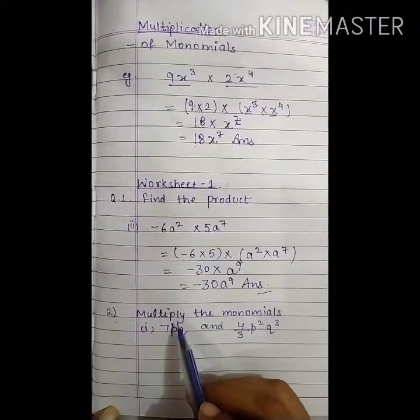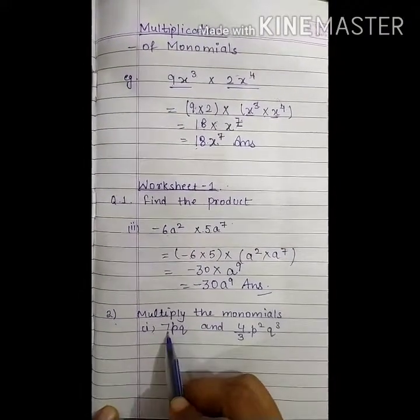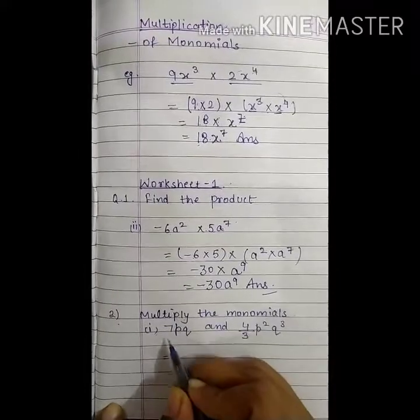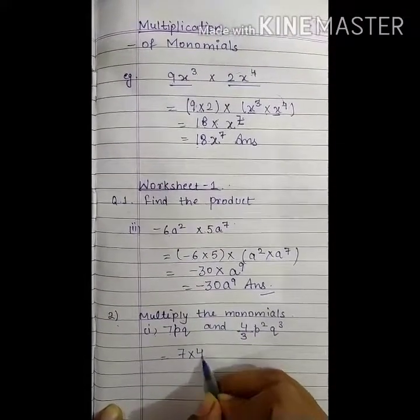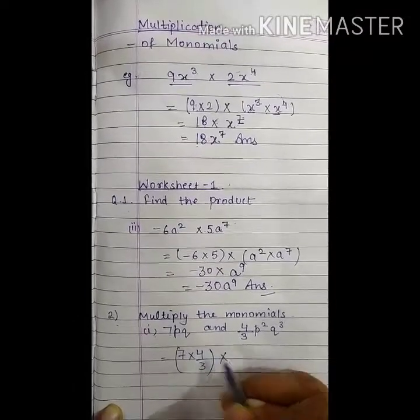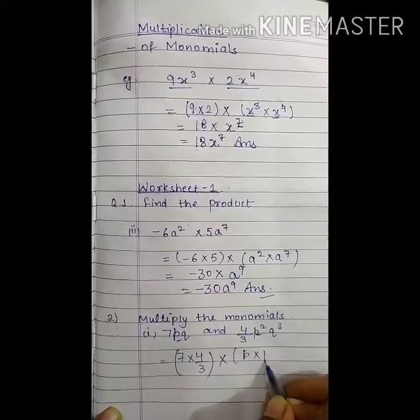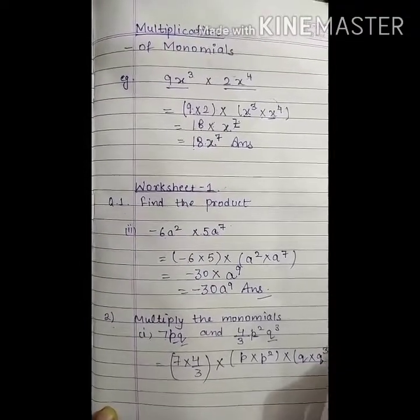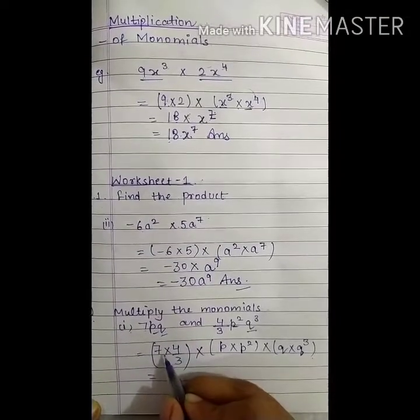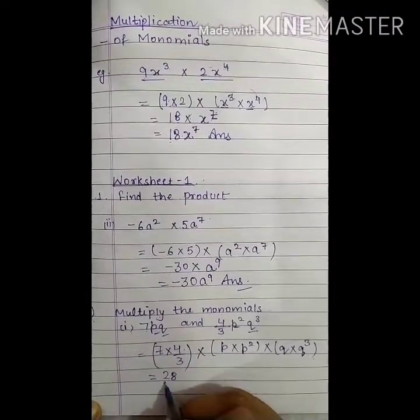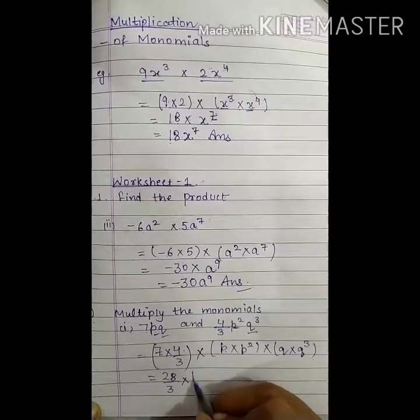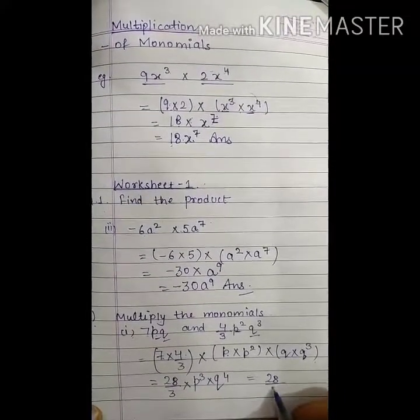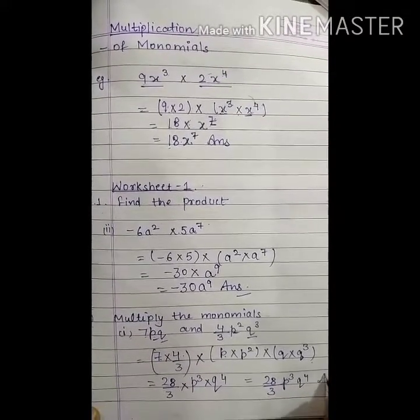Question number 2 is: Multiply the monomials. Part 1 is 7p³ and 4/3 p²q³. So, first of all, we multiply 7 by 4/3. Then, multiply the variable p. Then, multiply the variable q. It equals 7 fours is 28/3, p³ q⁴. So, 28/3 p³q⁴ is answer.